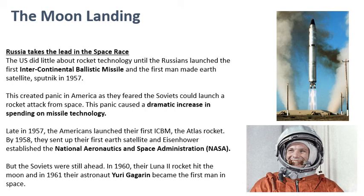Despite this, in the early stages of the space race it was actually Russia who pulled out an early lead. The US did very little about their rocket technology until the Russians launched the first intercontinental ballistic missile — an ICBM — which was capable of traveling from one continent to another. This missile could be launched from Russia and hit a target in America, and when America saw this they got very scared and thought they had to really up their game.